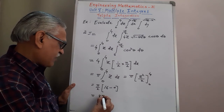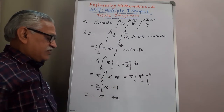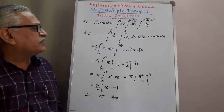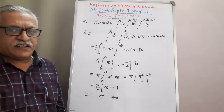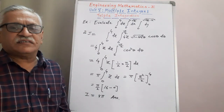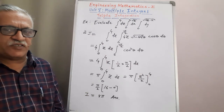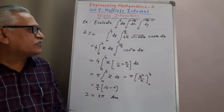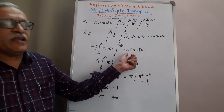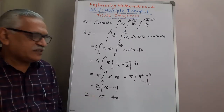Integrating Z with respect to Z gives Z squared by 2, evaluated from 0 to 4. Therefore it is pi times (4 squared divided by 2 minus 0), which is pi times (16/2) equals 8 pi. So the required answer is 8 pi. In this way we evaluate the triple integral using the standard substitution B equals A sin squared theta when the integral contains a binomial term in the form A minus B, and apply the reduction formula to get the result.